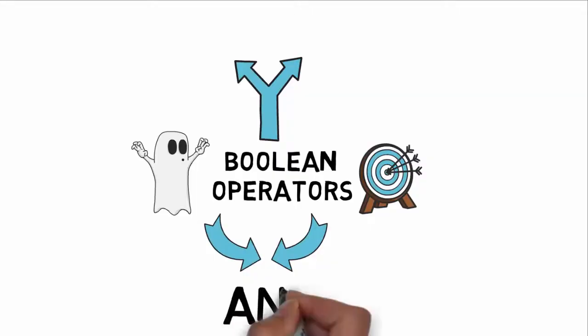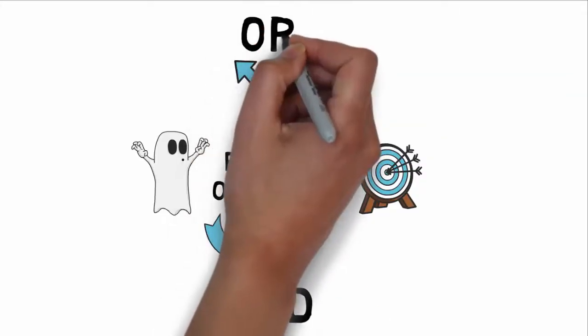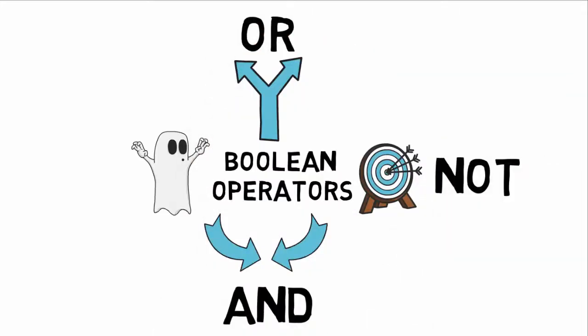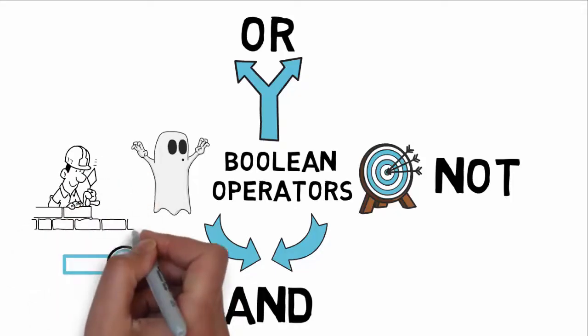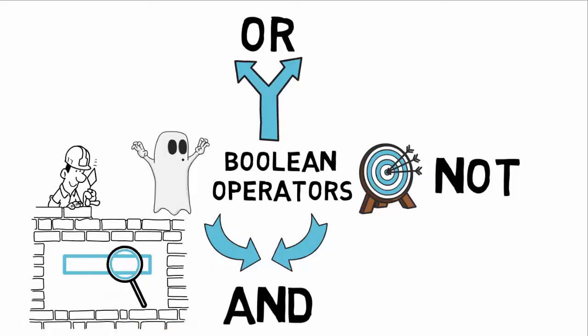Common Boolean operators are AND, OR and NOT and you can use Boolean operators in most search engines. Often an advanced search function is designed to help you build your search using these operators.